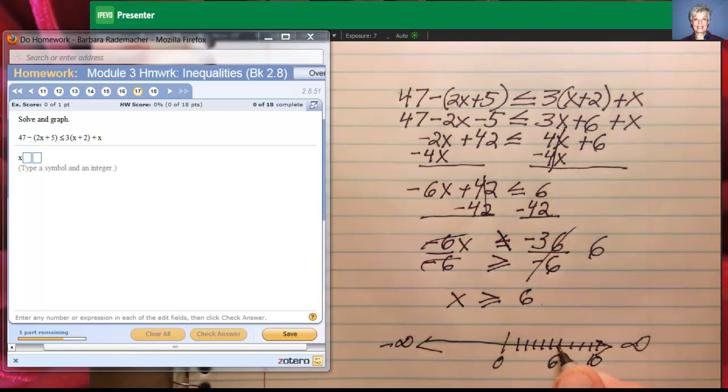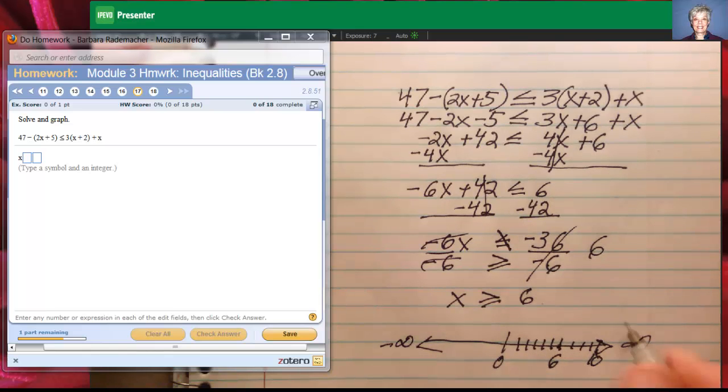And notice that 6 is the end point right here. And I'm looking for numbers greater than 6. Well, 10 is greater than 6. So I'll be drawing my arrow off to the right. And the fact that x can actually equal 6 means that I will make a bracket here at 6.